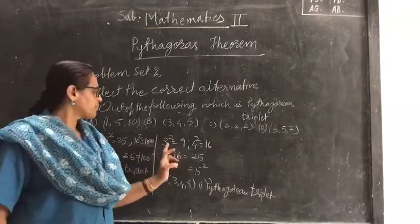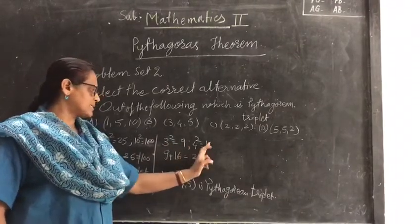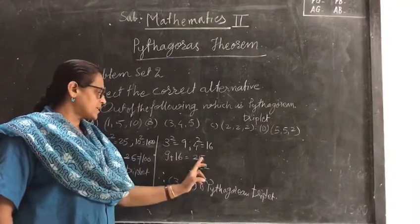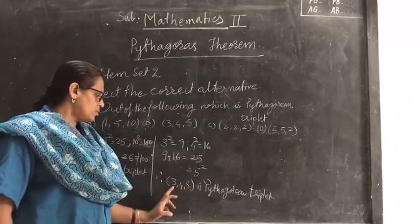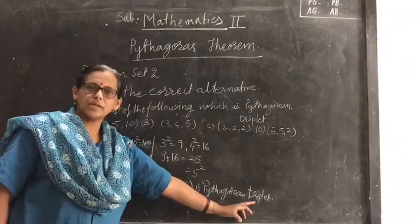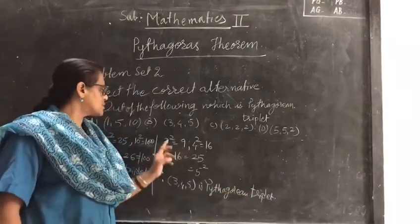Go for second alternative: 3 square is 9, 4 square is 16, 9 plus 16 is 25, which is 5 square. So, 3, 4, 5 is a Pythagorean triplet. So, your correct option is B.